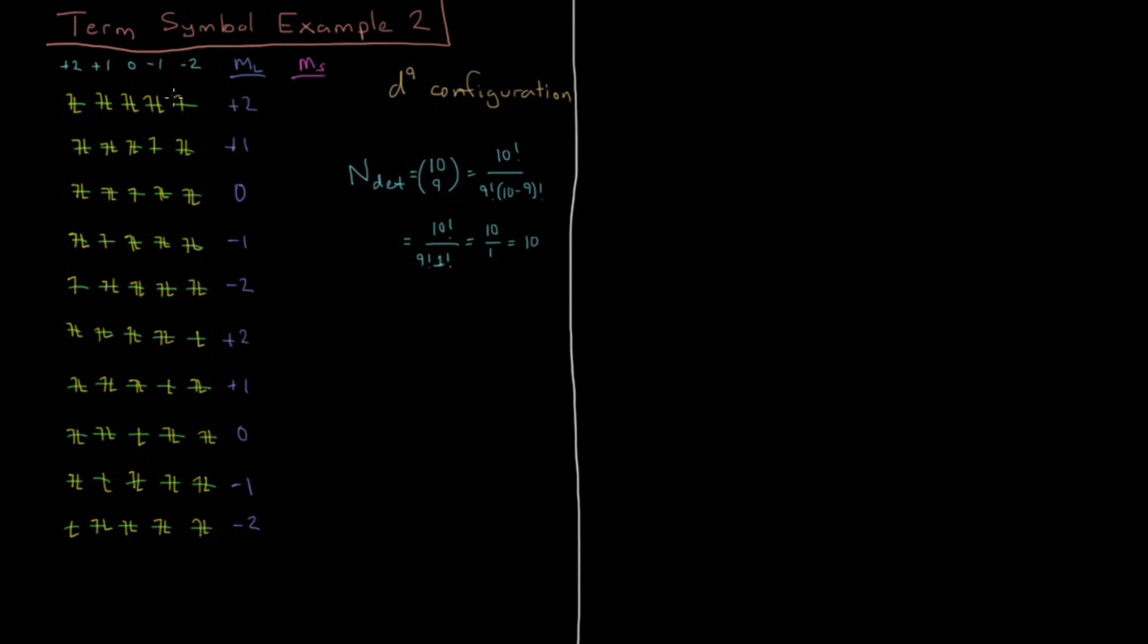For M_S in each case, you have 5 spin up and 4 spin down electrons in the first 5 configurations, and 5 spin down and 4 spin up in the last 5. Adding plus 1/2 for spin up and minus 1/2 for spin down, we get plus 1/2 for the first 5 and minus 1/2 for the last 5.